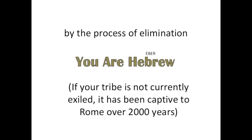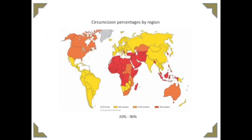Now we need to find out where the tribes ended up. To do so, we find those communities of the world that are influenced by the uniquely Abrahamic custom of circumcision. It is difficult to find an area of the world not influenced by this specific practice. Every colored section shows the various average ranges regionally. While we could expect to find this practice among Arab groups and among Semitic Jews, the percentages we see in this depiction suggest the ten lost tribes took this custom with them into captivity.